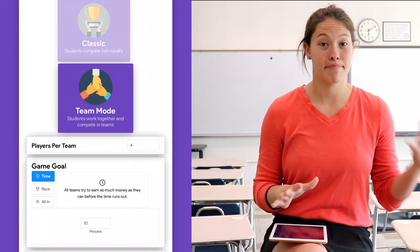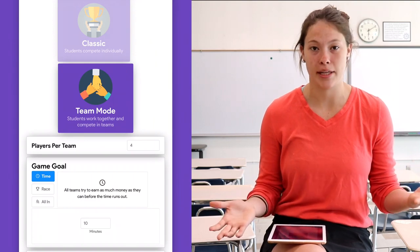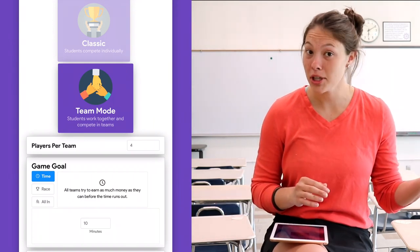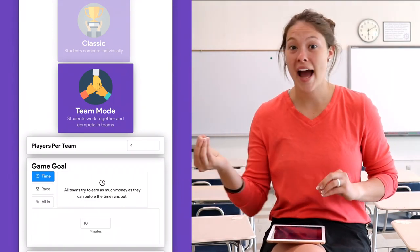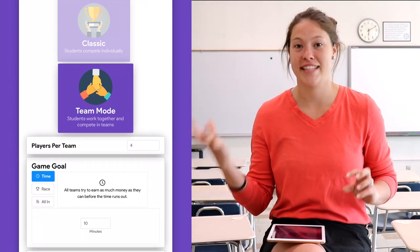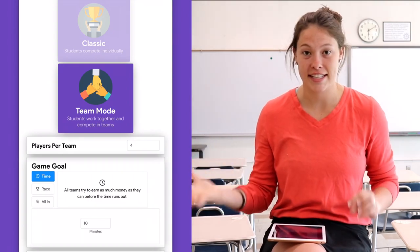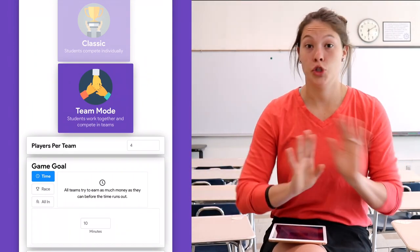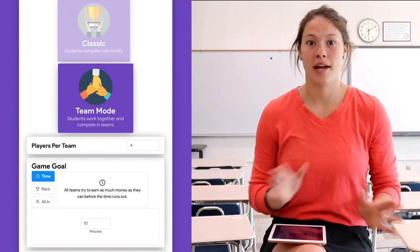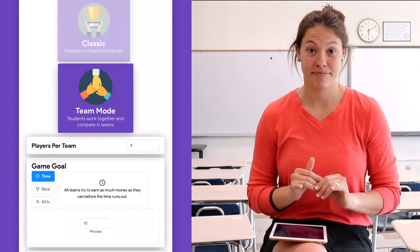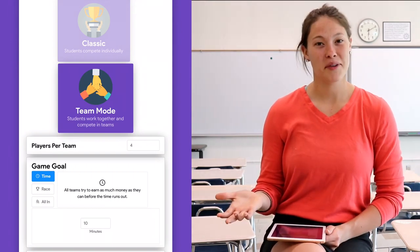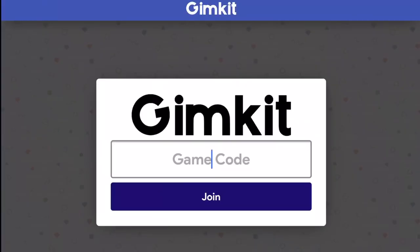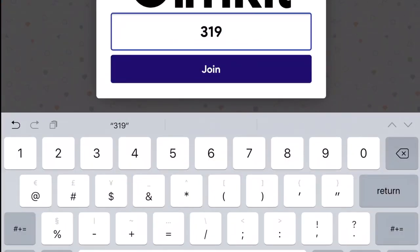If you choose Team Mode, you can put as many people as you would like in each team. Sometimes I do two people per team, sometimes I do one half of the class versus the other half. GimKit will automatically decide the teams, so you do not have to worry about splitting up teams evenly. As soon as you decide what mode you would like to play, go ahead and hit Continue.